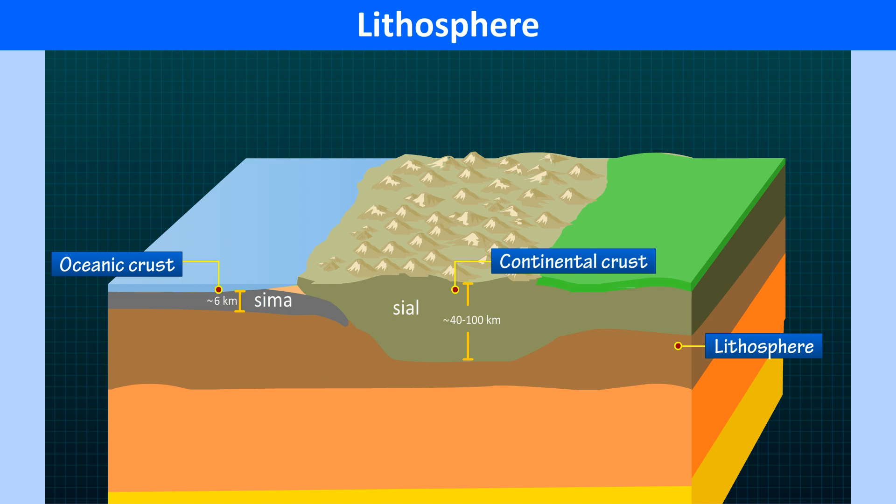For example, 3200 m above sea level means that the elevation of land is measured from the level of the sea, which is taken as zero.